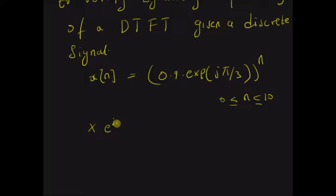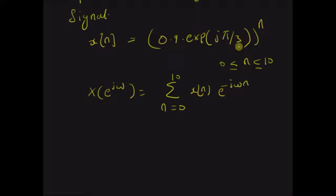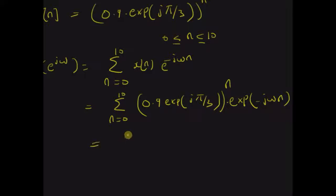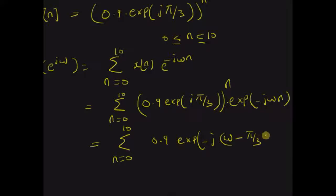Clearly, the DTFT is given by X(e^jω) = sum from n=0 to 10 of x(n) * e^(−jωn). By directly plugging in the value of the signal, we have summation from n=0 to 10 of 0.9 * e^(jπ/3) * e^(−jωn), which equals sum from n=0 to 10 of 0.9 * e^(−j(ω − π/3)), all raised to the power n. This complex number has a magnitude less than or equal to 1.